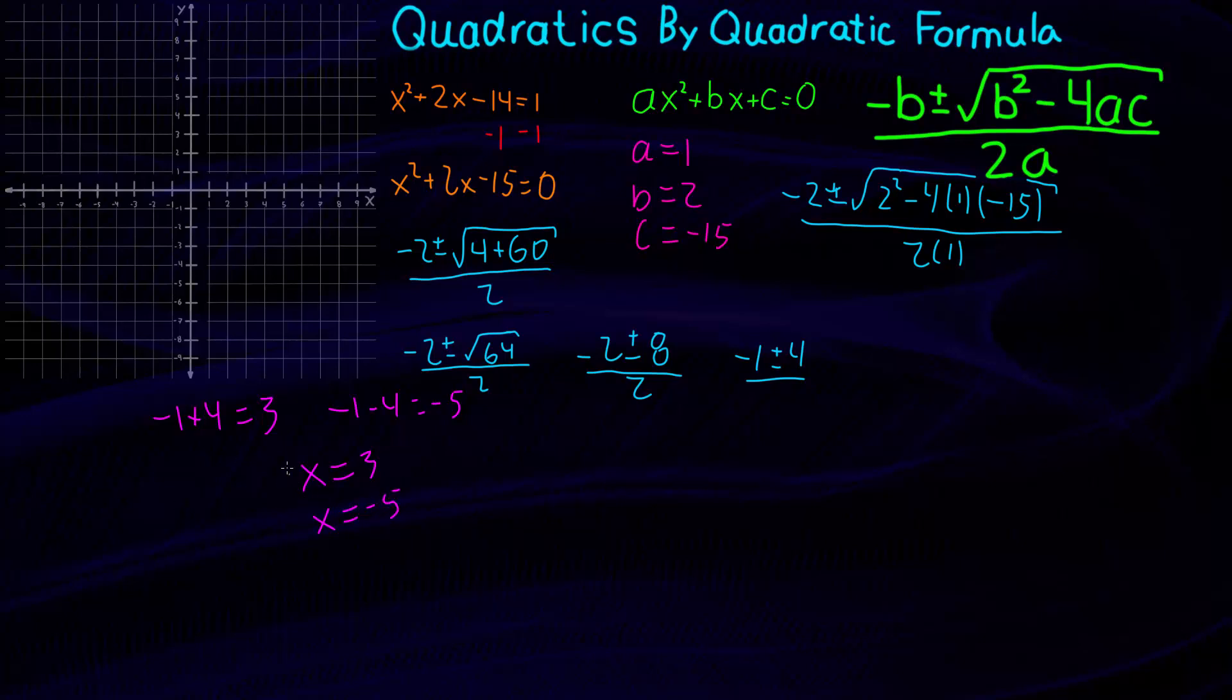All right, so what we want to do quick is go ahead and check that. We want to make sure that these work out. So we'll do it in purple. We'll do the negative 5 one because that's a little more complicated. So I just wrote the variable in purple. So 2 plus 2 times that minus 14. Right, so this is the same as this equation up here. We have just swapped in the value of x as you can see here.